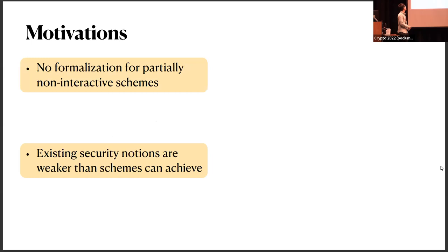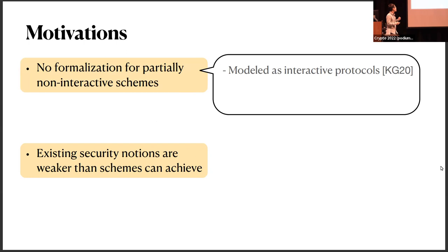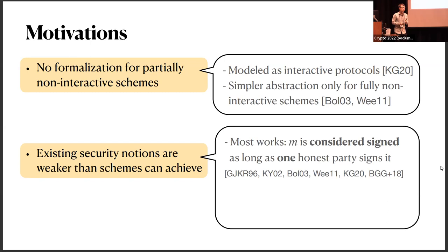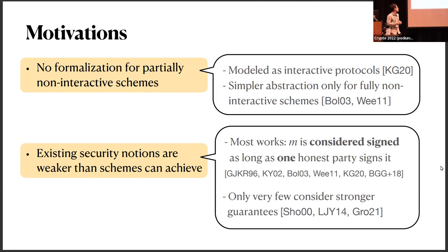Before we go into that, let me briefly recall the two motivations. First, there is no formalization for partially non-interactive schemes yet — the original FROST paper treated the scheme as a general interactive protocol, and the simpler abstraction only exists for fully non-interactive schemes. Second, and more importantly, existing security notions are weaker than what schemes can achieve. In the security game defined by most previous works, a message M is considered signed as long as one honest party has signed — this provides very weak guarantees when the adversary does not corrupt many signers.